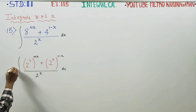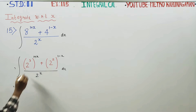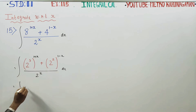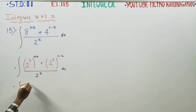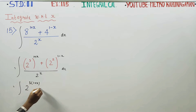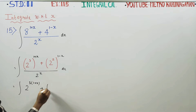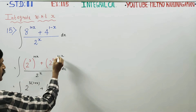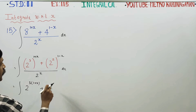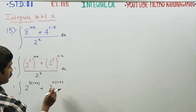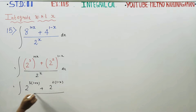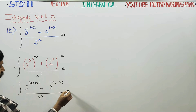8 is 2 cube, so that becomes 2 power 3 into (1 plus x), power (1 plus x), which is 3 into (1 plus x). Plus 2 power 2 into (1 minus x), divided by 2 power x, dx.